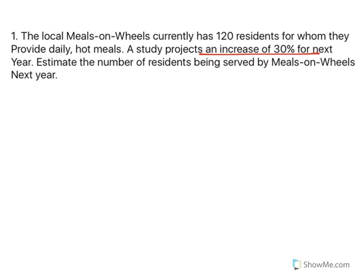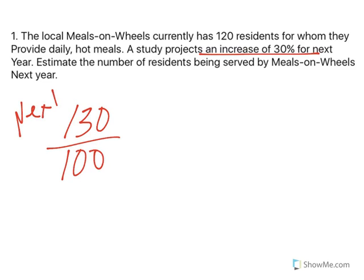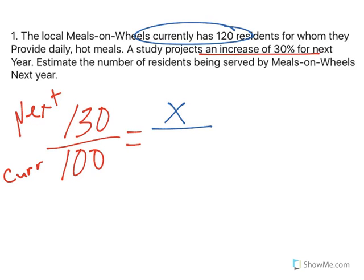As soon as I see an increase of 30%, I know my reference percent is 100. An increase is more than that. So this is next year, this is current. We want to estimate the number of residents being served next year — that's what we're trying to find — and it says currently we have 120.